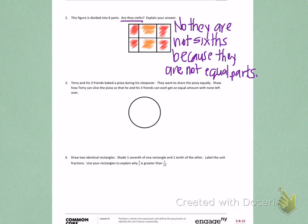Number 3. Terry and his 3 friends baked a pizza during his sleepover. They want to share the pizza equally. Show how Terry can slice the pizza so that he and his 3 friends can each get an equal amount with none left over.